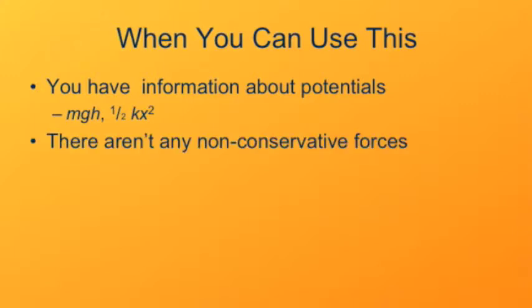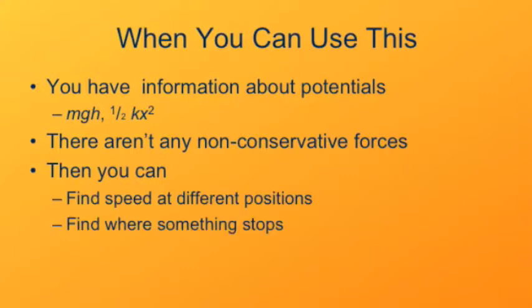Also you have to know in this system that there aren't any non-conservative forces acting, because of course if you want to conserve mechanical energy, that has to be the case. If those criteria are satisfied, then we can do things like find the speed at different positions, or find where something stops, that would be where we know the speed is zero, for instance.